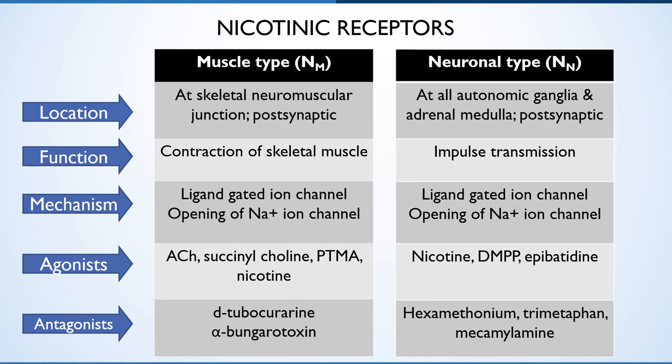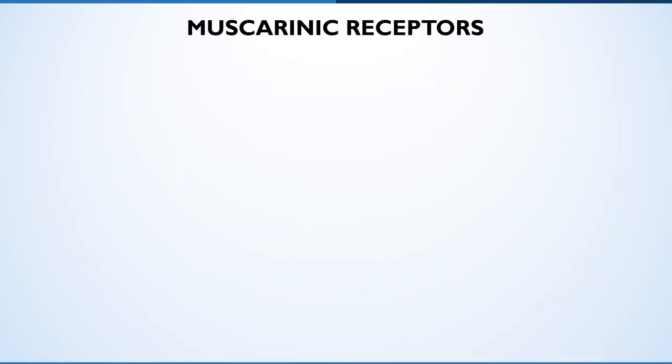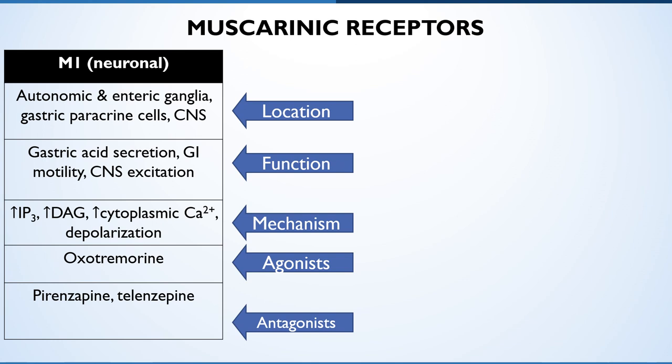Let's see muscarinic receptors. The neuronal and gastric M1 receptors are found on sympathetic ganglia, in the cerebral cortex, and on gastric paracrine cells. They mediate excitatory effects and increase in gastric acid secretion. These are also involved in slow excitation of sympathetic ganglia and central neurons by acetylcholine. Derangement of this acetylcholine-mediated muscarinic excitation in the brain is possibly associated with dementia. Their mechanism involves increase in inositol phosphate and diacylglycerol, increasing cytoplasmic calcium. The agonist is oxotremorine; antagonists are pirenzepine and telenzepine.